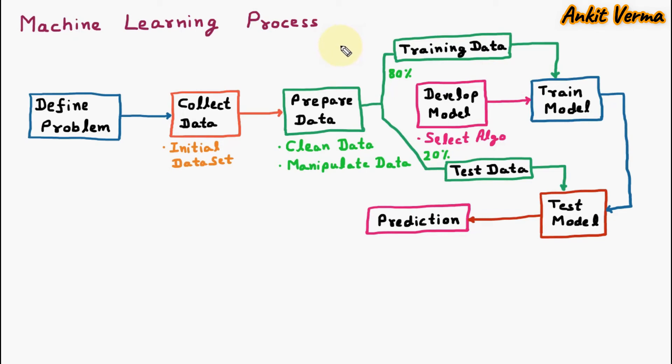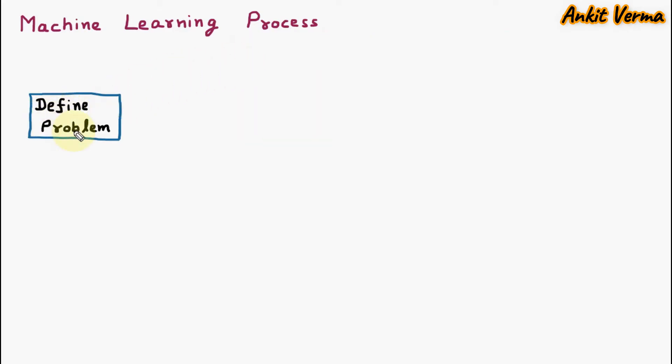Hello everyone, my name is Ankit Verma and today we are learning machine learning process. Here the first thing is define a problem. Whenever we are designing a model, we are going to define a problem or objective.